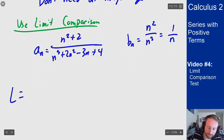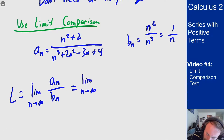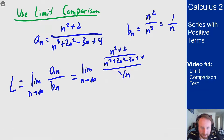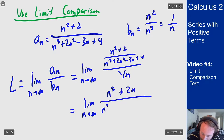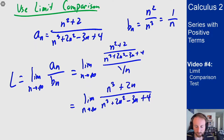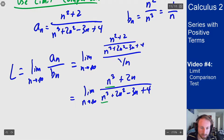The L I want to find is the limit as n goes to infinity of a_n over b_n. I can flip the 1 over n to give me the limit as n goes to infinity of (n cubed plus 2n) over (n cubed plus 2n squared minus 3n plus 4). We're in the highest-power rule situation with a polynomial on top and bottom. I have n cubed on top and n cubed on the bottom, both with coefficient 1, so this limit is 1.